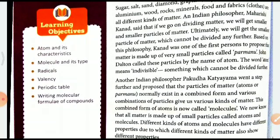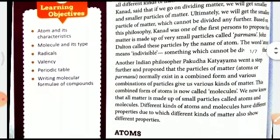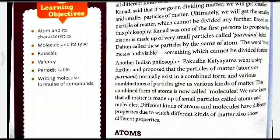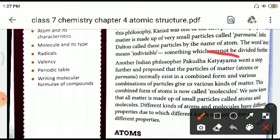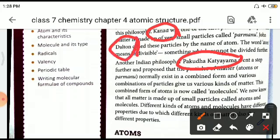Another Indian philosopher, Pakuda Katyayan, went a step further and proposed that the particles of matter — parmanu — normally exist in a combined form, and various combinations of particles give us various kinds of matter. Pakuda Katyayan said these parmanus normally exist in a combined form, which is now called molecules. We now know that all matter is made up of small particles called atoms and molecules. The contributions of both Pakuda Katyayan and Kannad, as well as John Dalton, can never be underestimated.